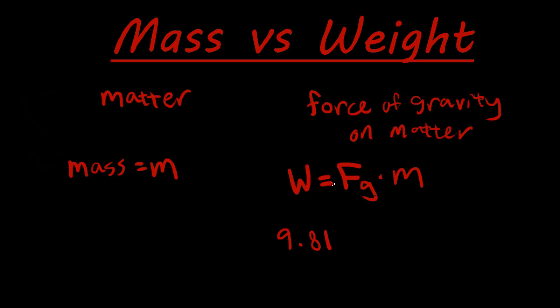However, the mass always stays the same. So in this case, our mass of a person is the same as the mass here. And then multiply that by the force of gravity, which is 9.81 on Earth. And then you're going to get your weight.